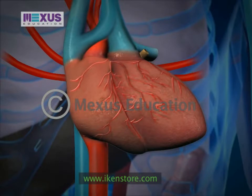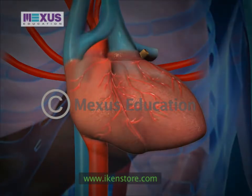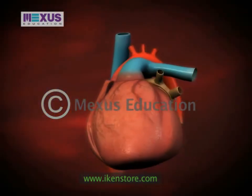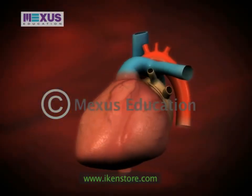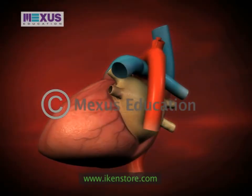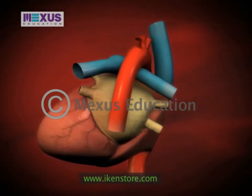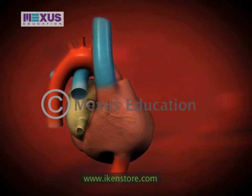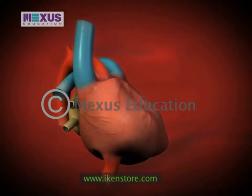Since the heart muscles never rest, the heart needs a constant supply of blood and oxygen. So it's important that blood can easily flow through all the branches of the coronary arteries.